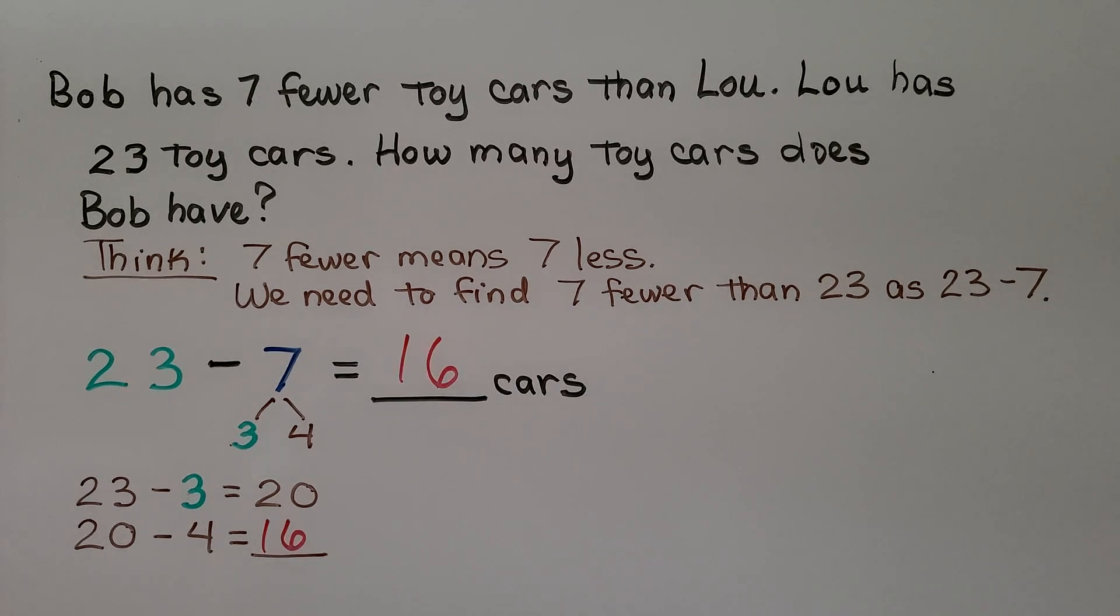If you said 16, you're right. 23 minus 7 equals 16. Bob has 16 toy cars.